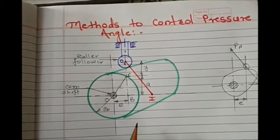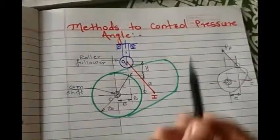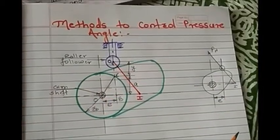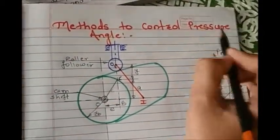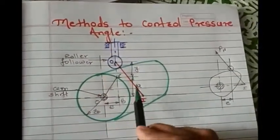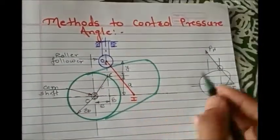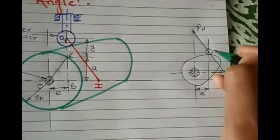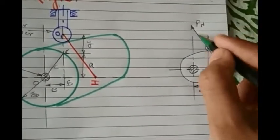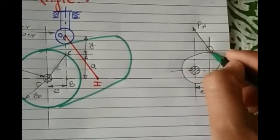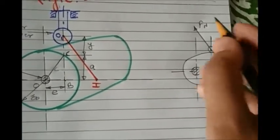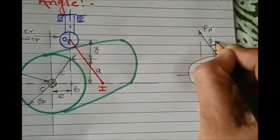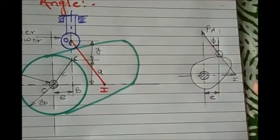Let's start a new topic from the unit of cam and follower: the method to control the pressure angle. Before that, let's see what is pressure angle. We know that pressure angle is the angle between the line of motion of the follower and the normal to the pitch curve at a point of contact.